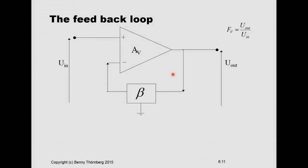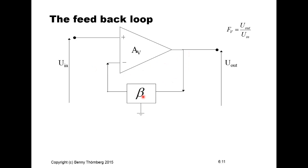Here we see an amplifier with amplification AV that amplifies the difference signal between its two input terminals and gives the output voltage on the output terminal. We are seeking the whole circuitry's amplification FV, which is the output voltage divided by the input voltage. We also have a feedback network beta — a passive network that feeds a small portion of the output signal back to the negative input terminal.